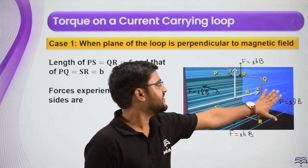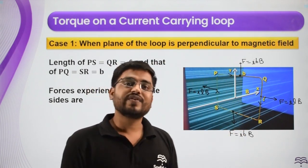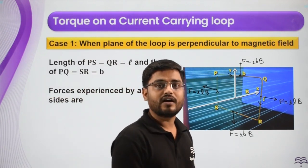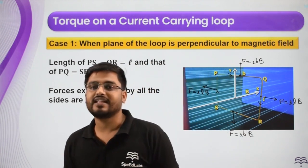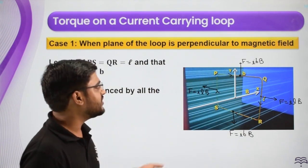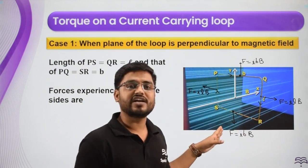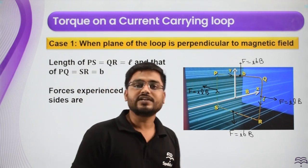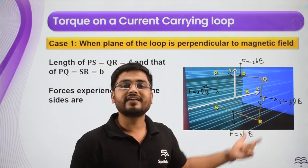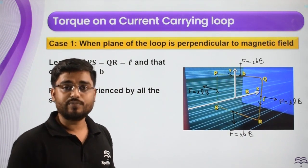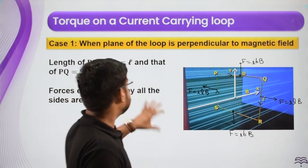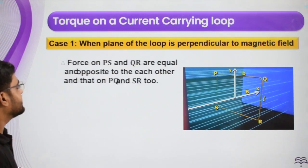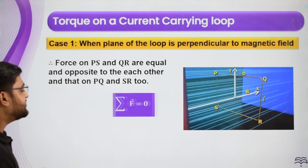So there are four forces and all of them cancel each other out — this one is cancelled by that, and this one is cancelled by this. The total force is zero. Remember, for a bent wire the force is I times effective length times B. For a closed loop — whether square, rectangular, or irregular — the effective length is zero, so the net force is always zero.